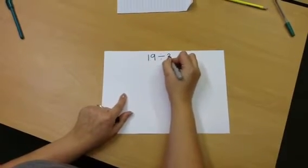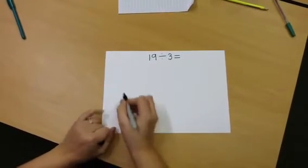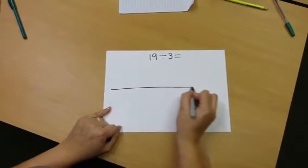As we are dividing, we're going to use repeated subtraction on an empty number line. Draw the number line and look at the largest number.